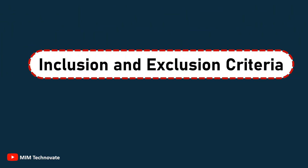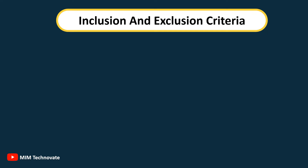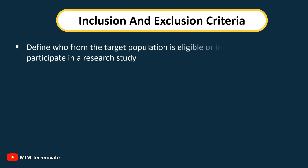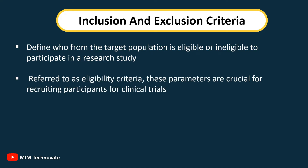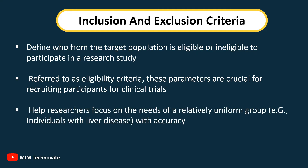Inclusion and exclusion criteria define who from the target population is eligible or ineligible to participate in a research study. Collectively referred to as eligibility criteria, these parameters are crucial for recruiting participants for clinical trials. They help researchers focus on the needs of a relatively uniform group — for example, individuals with liver disease — with accuracy.